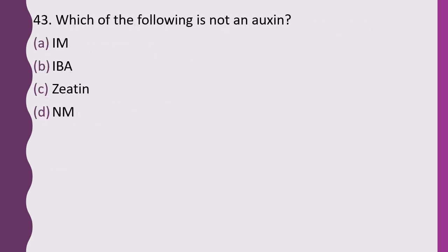Question 43. Which of the following is not an auxin? IAA, IBA, zeatin, or NAA. The correct answer is option C — zeatin is not an auxin.